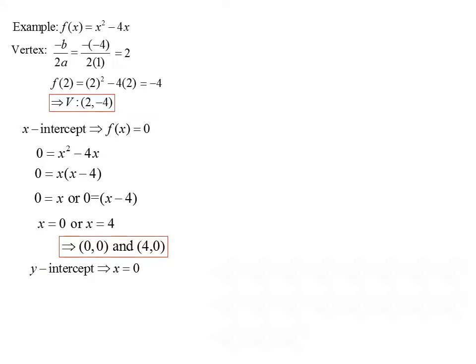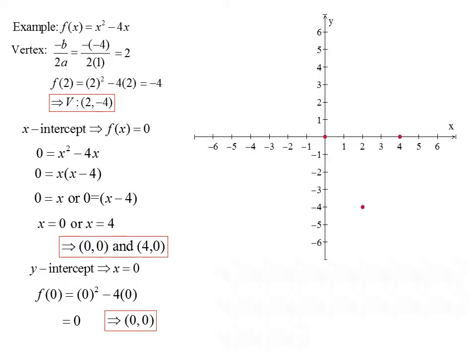To find the y intercept, set x equal to 0: f of 0 equals 0 squared minus 4 times 0, which simplifies to 0. So the y intercept is the point 0, 0. We can plot the vertex at 2, negative 4 and the two x intercepts and y intercept at 0, 0 and 4, 0, then connect the dots to sketch the parabola.